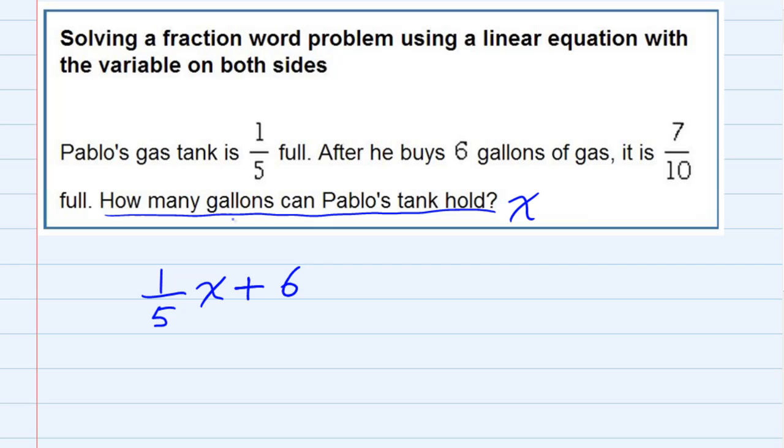After he adds those six gallons we're told that it is now seven-tenths full. So he started off with one-fifth of a tank, added six gallons, and now has seven-tenths of a tank of gas.